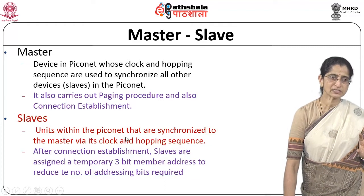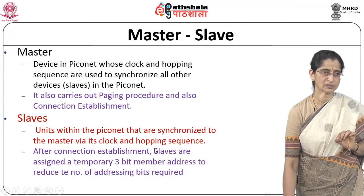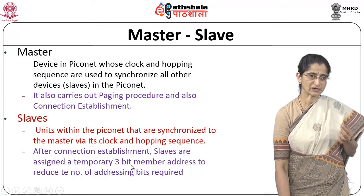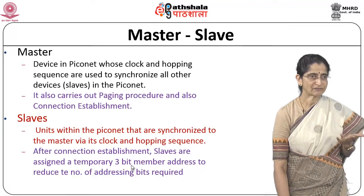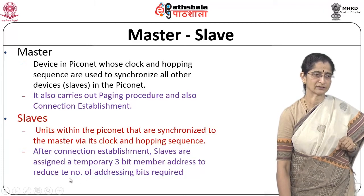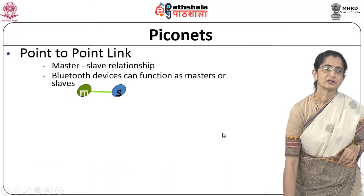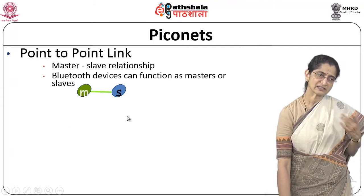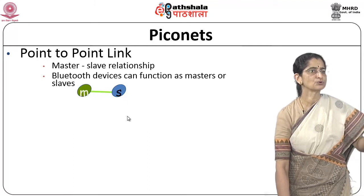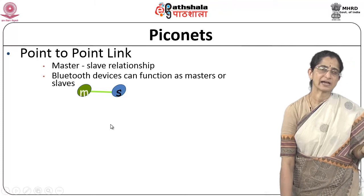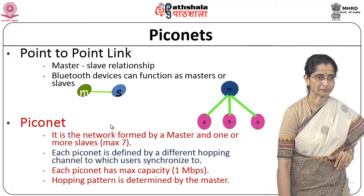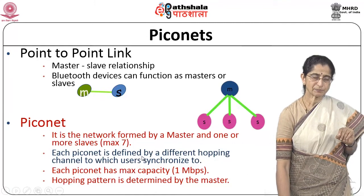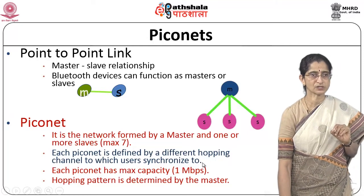Slave devices are defined as those units synchronized to the master via the master's clock and hopping sequence. After connection establishment, slaves are assigned a temporary 3-bit number — a 3-bit number means only 0 to 7, which is why about 7 devices are supported in a Piconet. This reduces the number of addressing bits required. A Bluetooth device can function as either a master or a slave, and each Piconet is defined by a different hopping channel to which users synchronize.